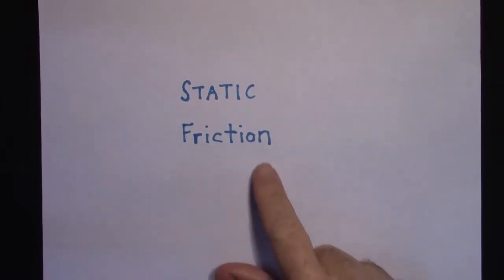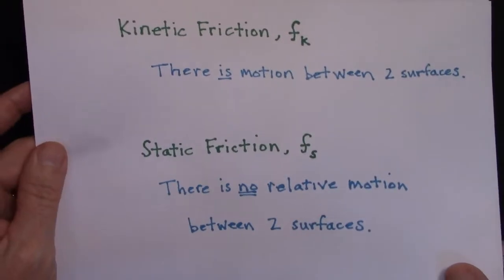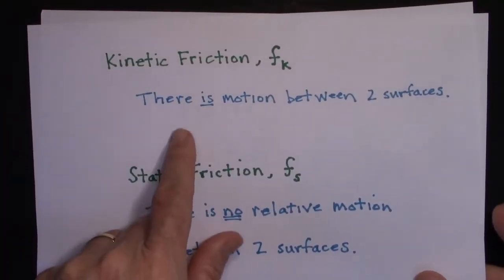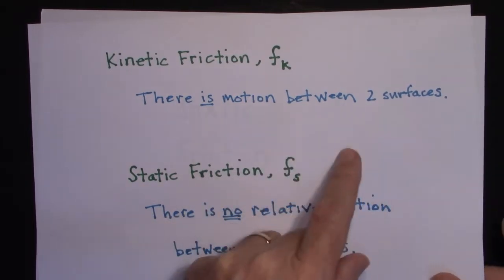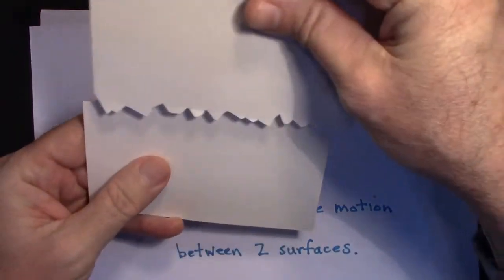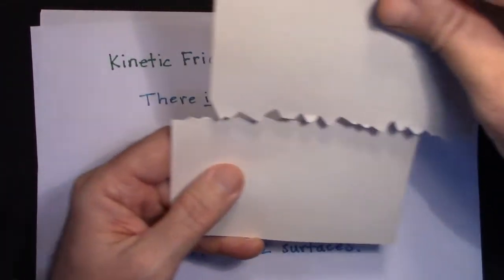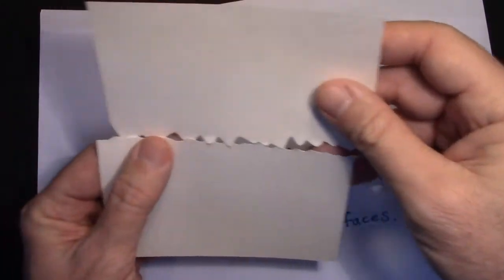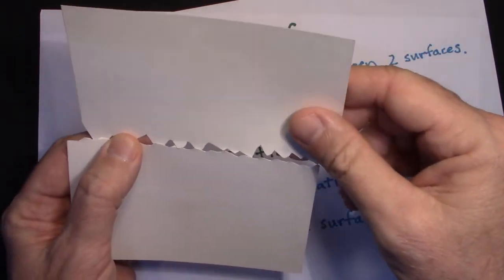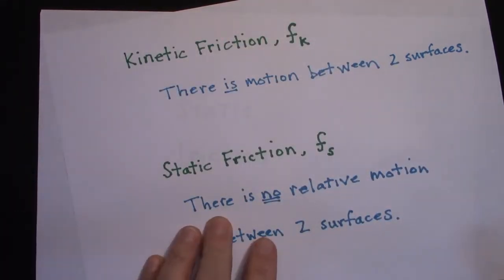I'll explain static friction in this video, assuming you've already looked at the video on kinetic friction. Kinetic friction is used when there is motion between two surfaces. If the two surfaces are moving relative to one another, you use kinetic friction. But if they're stationary, or you're trying to push on an object and it's not moving, that's static friction, which is a little bit trickier.